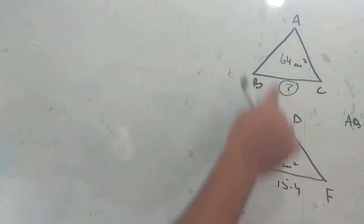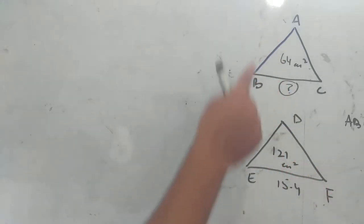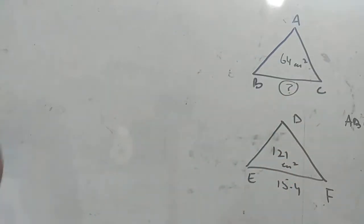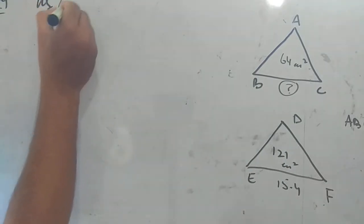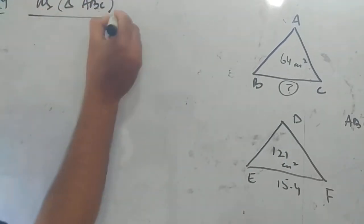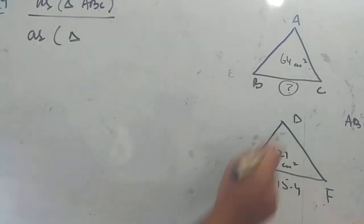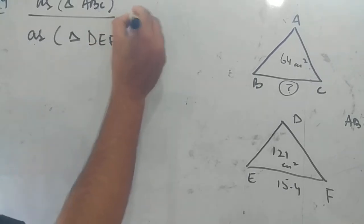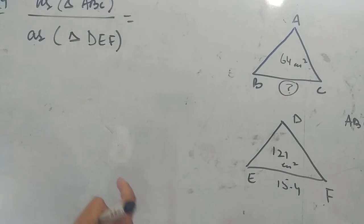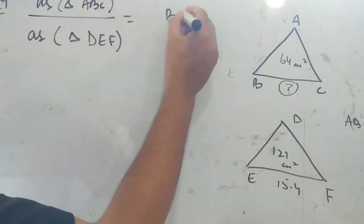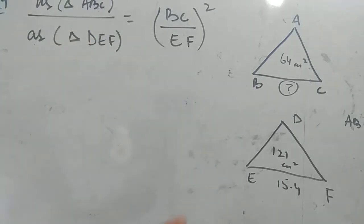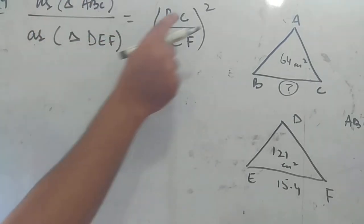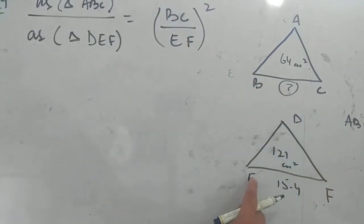Now dear students, it is given that these two triangles are similar. When two triangles are similar, we have proved that the ratio of the areas of two similar triangles is equal to the square of their corresponding sides. Solution: since these two triangles are similar, area of triangle ABC divided by area of triangle DEF is equal to the square of their corresponding sides — that is BC divided by EF, whole squared.